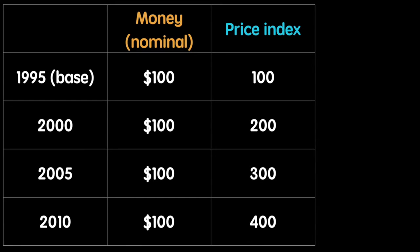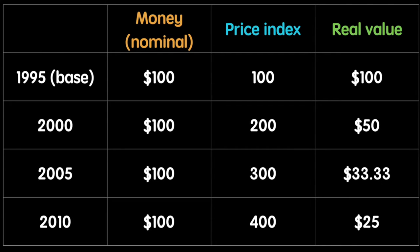As you can see, the price level has increased 100% from 1995 to 2000, 200% from 1995 to 2005, and 300% from 1995 to 2010. Our final column contains the real value of the worker's wages. In the base year, the real value and the nominal value are the same at $100.